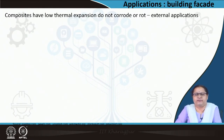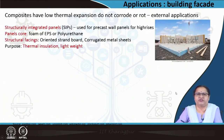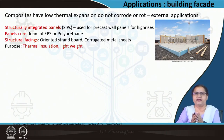Coming to the applications of composites in building facades — composites usually have low thermal expansion and do not corrode or rot, so we can go for external applications. We have seen precast slabs. Structurally Integrated Panels, or SIPs, have foam — EPS or polyurethane — sandwiched between a coating of metal sheet, oriented strand board, or another material that can withstand external conditions.